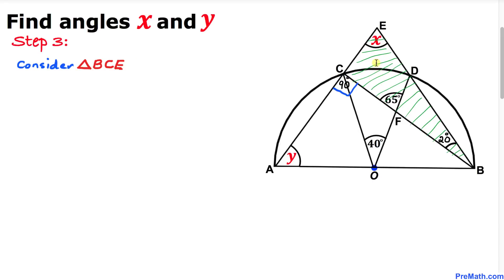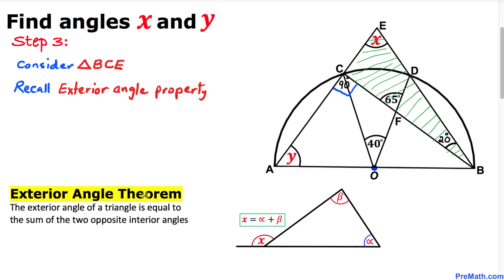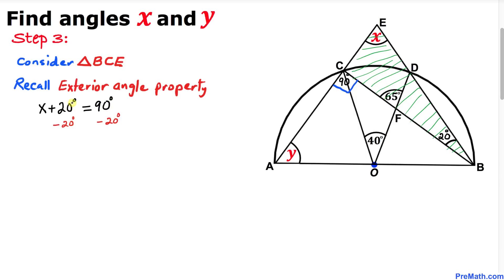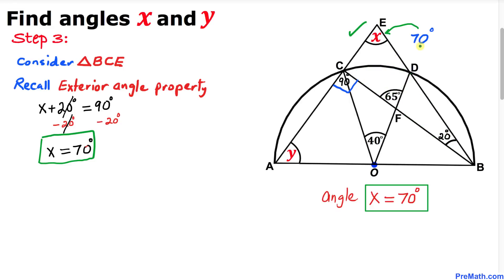Next, let's consider triangle BCE and recall the exterior angle property. This angle is our exterior angle and equals the sum of the two opposite interior angles. So angle x plus 20 degrees equals 90 degrees. Subtracting 20 degrees from both sides, x turns out to be 70 degrees.